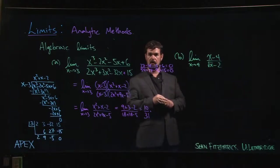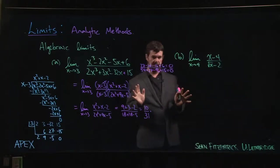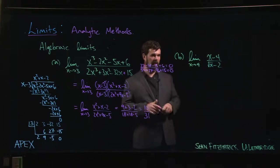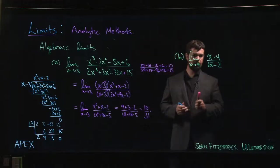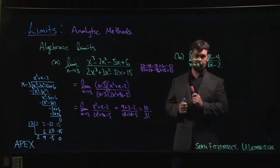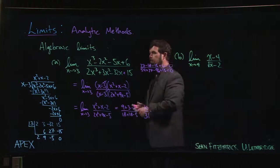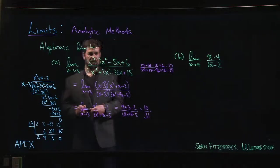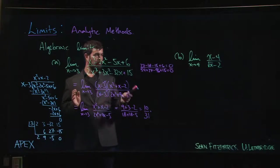Alright, so we'll look at one more limit that you can evaluate using algebraic methods. In this case, you'll notice that there is a radical—there's a square root—which is going to cause trouble for you. So we're not quite in the scenario where we're dealing with a polynomial function like we have here.